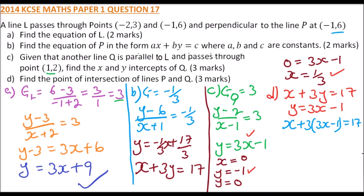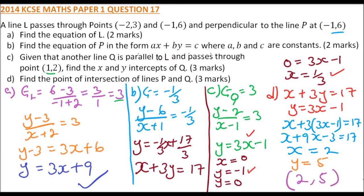Expanding: x + 9x − 3 = 17, so 10x = 20, giving x = 2. Substituting back: y = 3(2) − 1 = 6 − 1 = 5. So the point of intersection of p and q is (2, 5). That is how you work out that question.